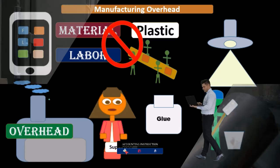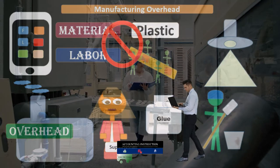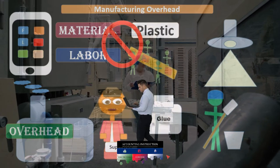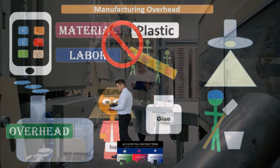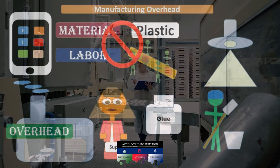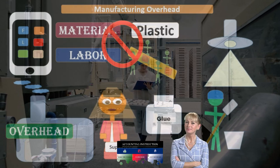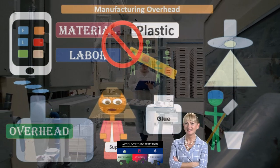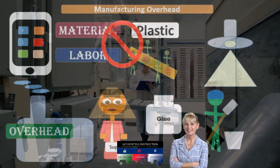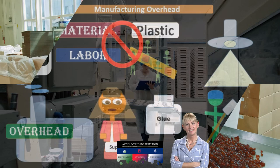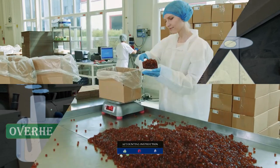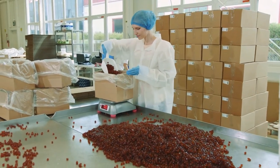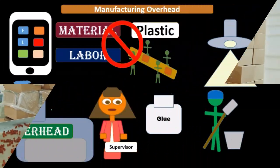Anything that says 'factory' on it and is involved in inventory production but cannot be applied directly would be included in overhead. Examples include rent on the factory, depreciation on the factory, and depreciation on the equipment.